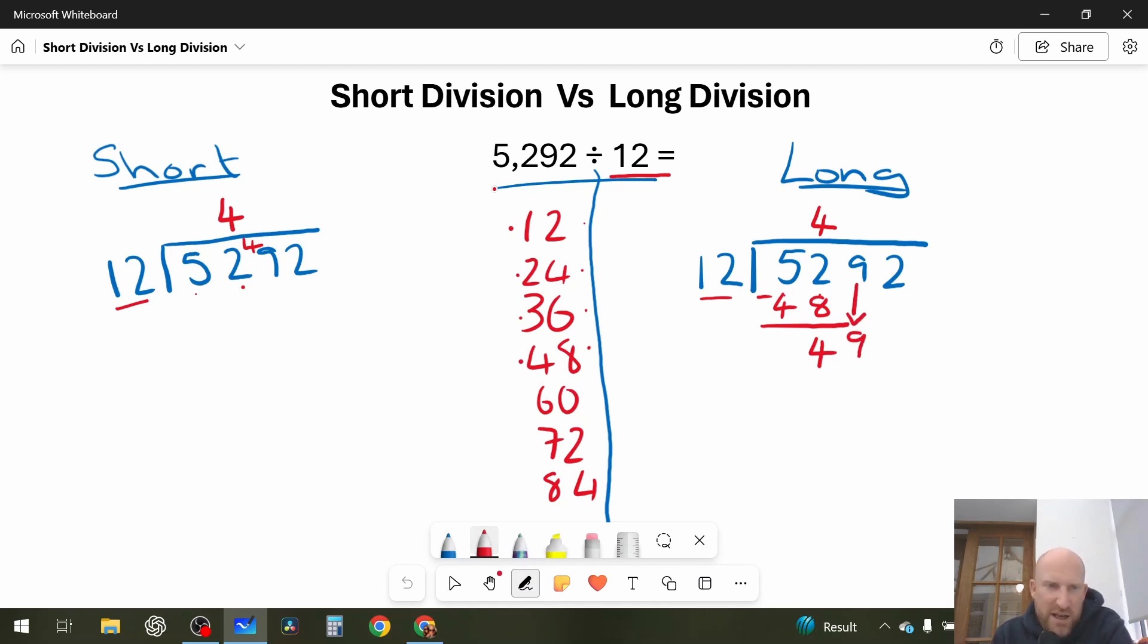So that's the next calculation I'm going to make, how many 12s in 49, so the answer is 1, 2, 3, 4 again. And again, another mental calculation is needed, so 49 take away 48, leaves me with 1 remainder.